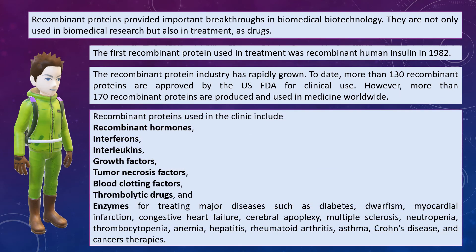Nowadays a number of recombinant proteins are being used for disease-curing purposes. These include recombinant hormones, interferons, interleukins, growth factors, tumor necrosis factors, blood clotting factors, thrombolytic drugs, and various enzymes for treating diseases such as diabetes, dwarfism, myocardial infarction, congestive heart failure, cerebral apoplexy, and a number of other diseases.